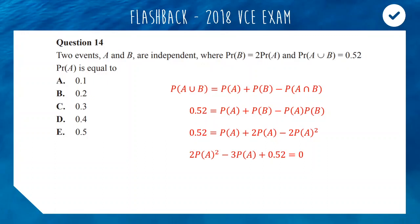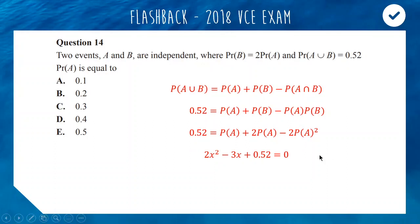So now if we collect this all on one side, we bring the minus 2 probability of A squared across to make it positive. The 3 probability of A gets brought over and it's negative. Now we have to solve what is essentially a quadratic. It might not look like a quadratic, but if I change these probability of A's to X's, it's a bit more quadratic now.